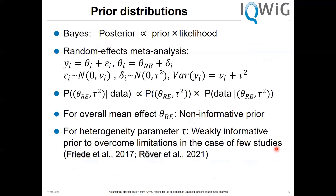In short, Bayesian methods mean that you combine the prior with the likelihood. In a random effects meta-analysis, this means you need prior distributions for the parameter of main interest and the heterogeneity parameter. In IQWIG, we think that for the overall mean effect we should always use a non-informative prior. But for the heterogeneity parameter, it may be useful to use weakly informative priors to overcome the limitation that you cannot estimate tau reliably in the case of very few studies.